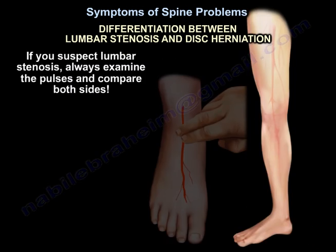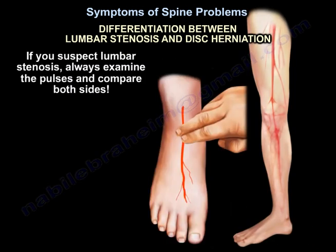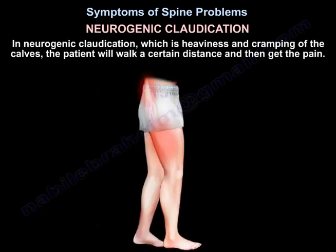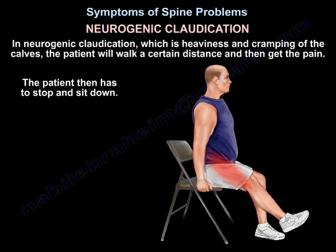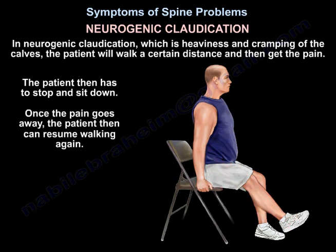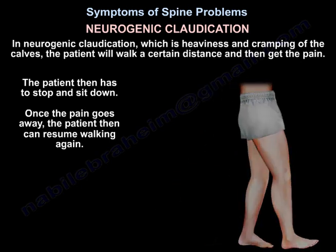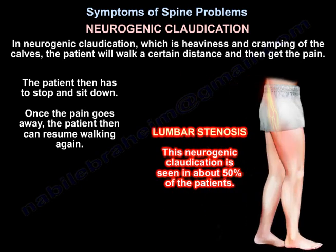If you suspect lumbar stenosis, always examine the pulses and compare both sides. In neurogenic claudication — which presents as heaviness and cramping of the calves — the patient will walk a certain distance and then get the pain. The patient then has to stop and sit down. Once the pain goes away, the patient can resume walking again. Neurogenic claudication is seen in about 50% of patients.